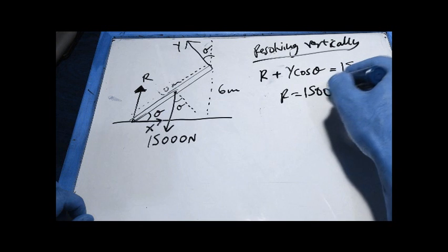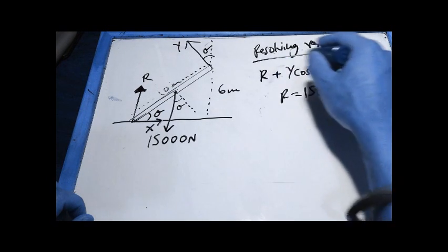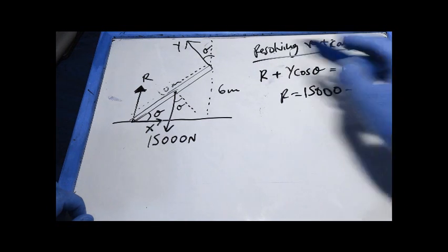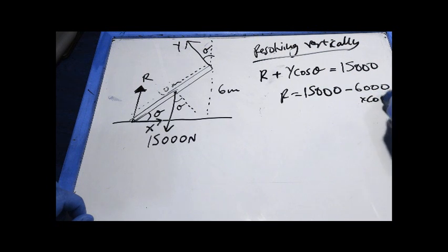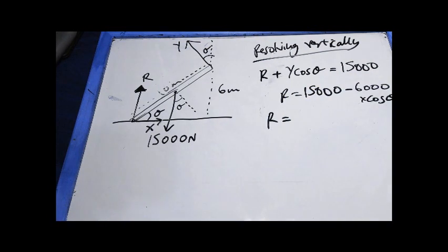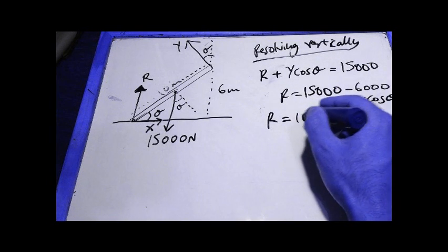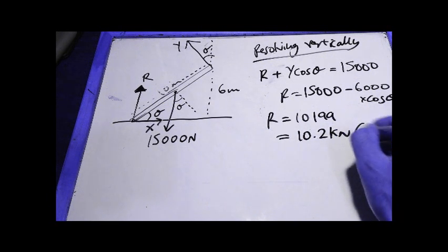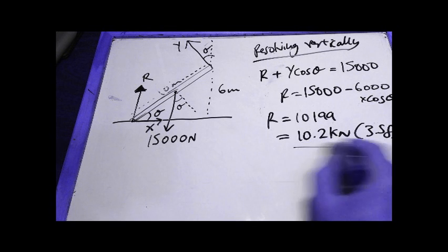So R equals 15,000 minus, I'm going to take this section over here, which is 6,000, I know what Y is, I've just worked out what Y is, 6,000 times by the cos of theta, which gives me R, which is the vertical component. 6,000 times by cos 36.869 is 4,800, 15,000 minus 4,800 gives me 10.199, which is 10.2 kilonewtons to 3 significant figures, that is the vertical component.